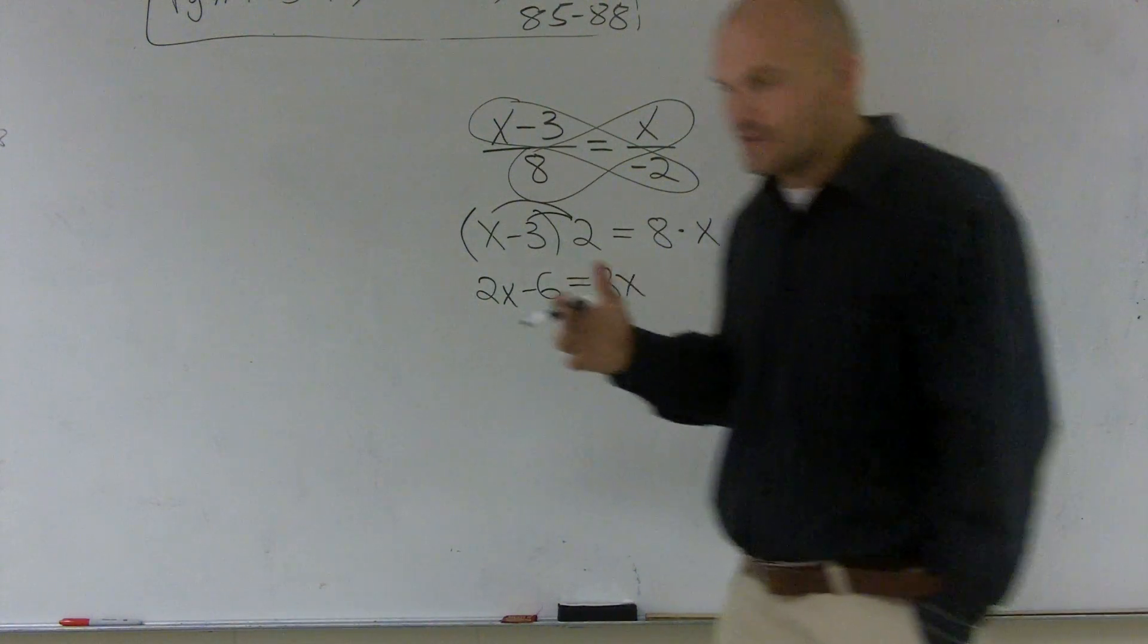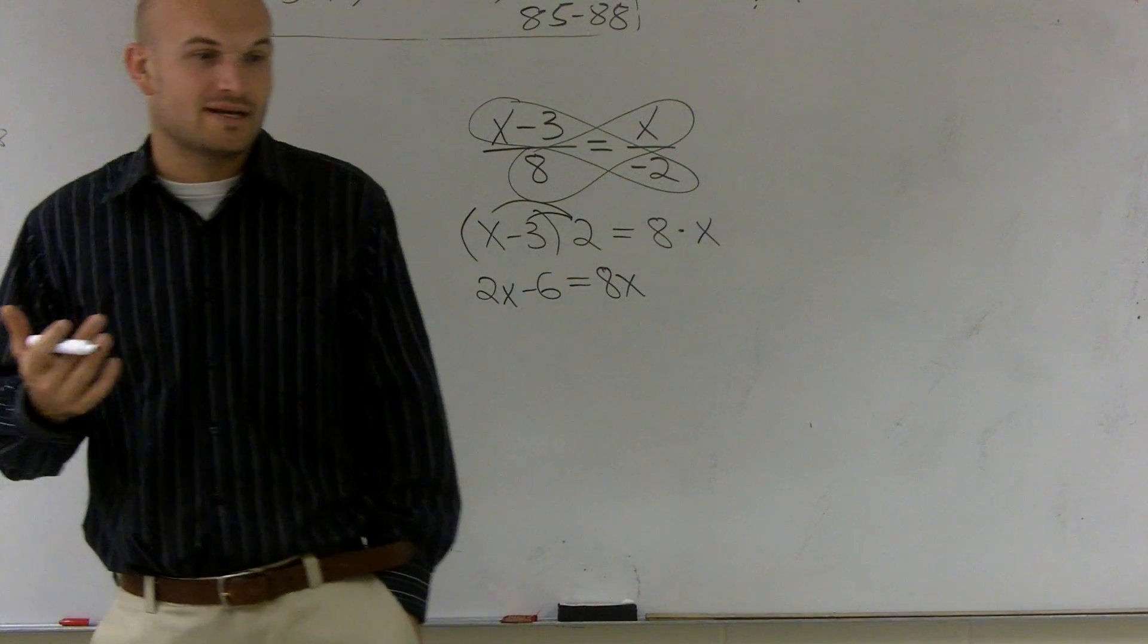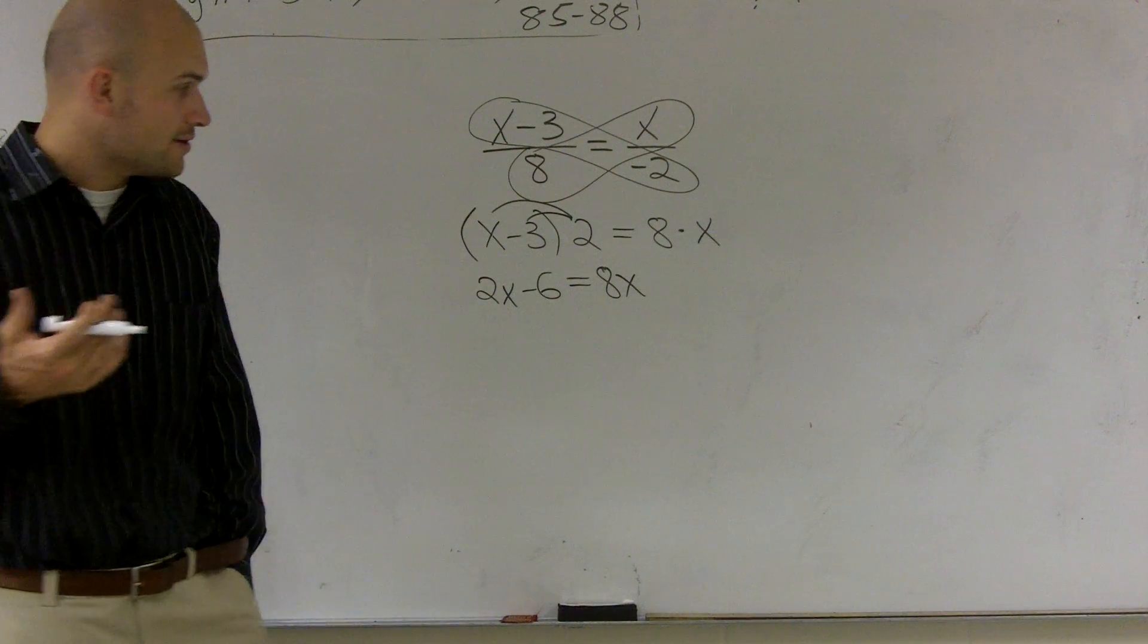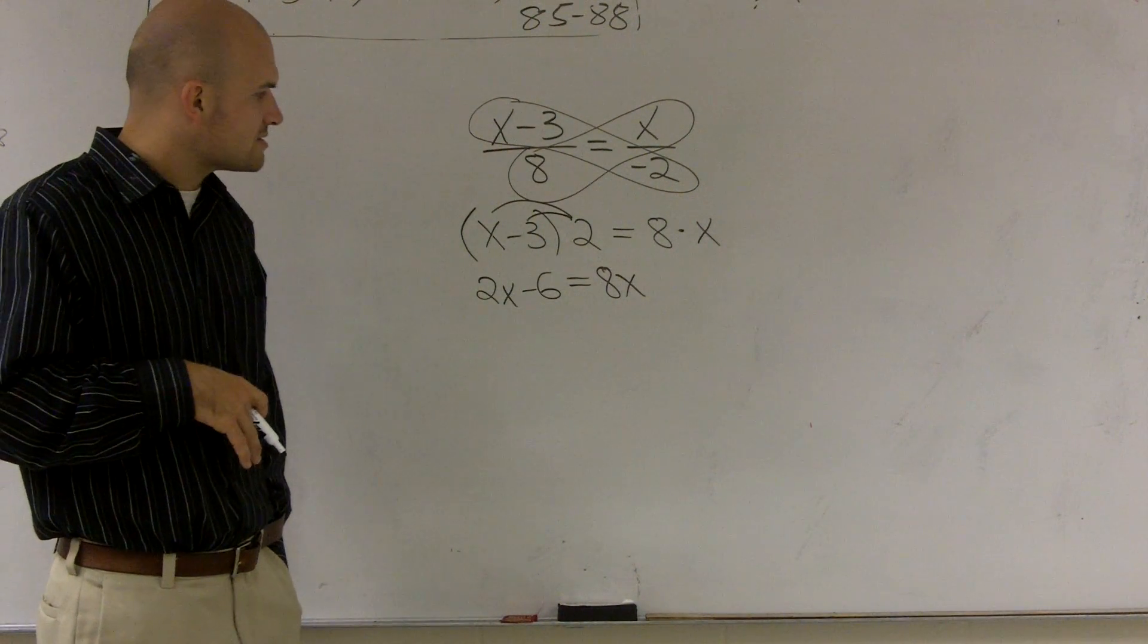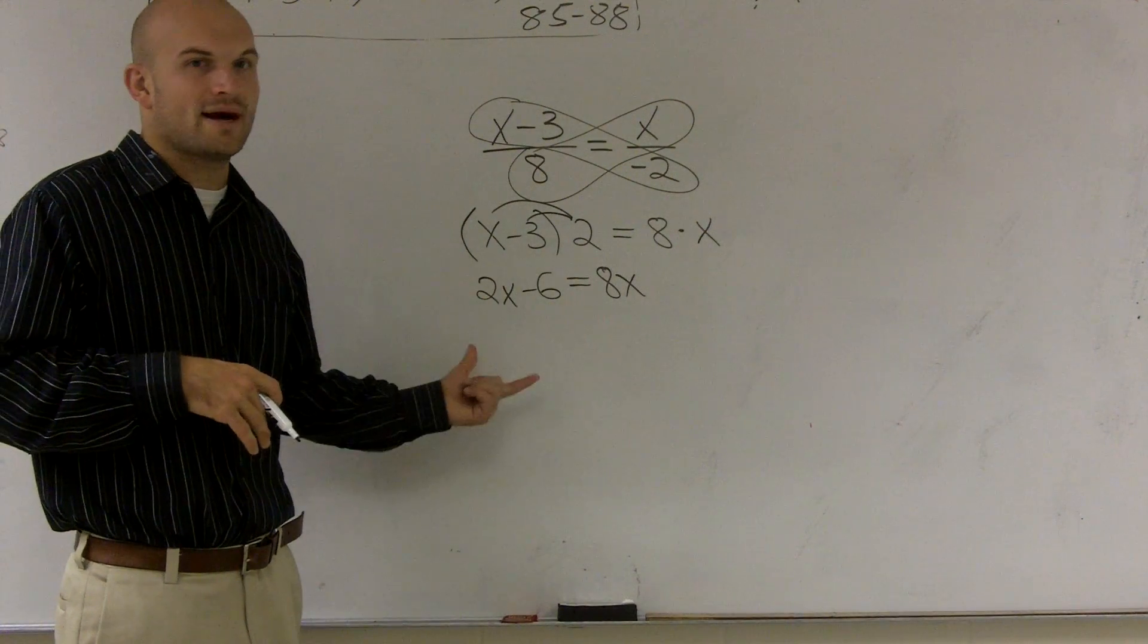Typically, it's helpful to get rid of the one that's smaller because that will prevent you from usually getting a negative number.